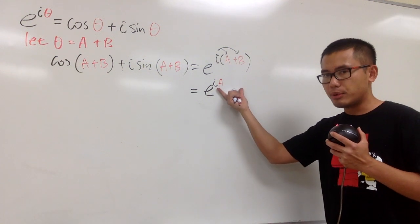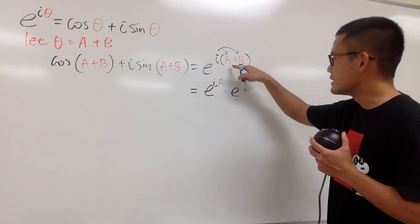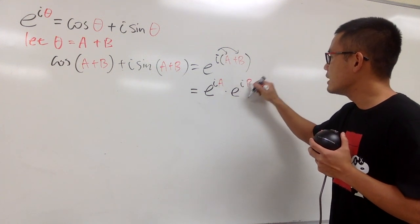But you know, when you are adding exponents, it's the same as multiplying by e, you keep the base, and then with that exponent, which is i b, like this.